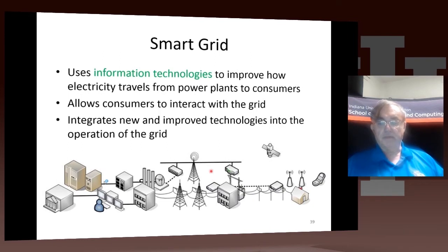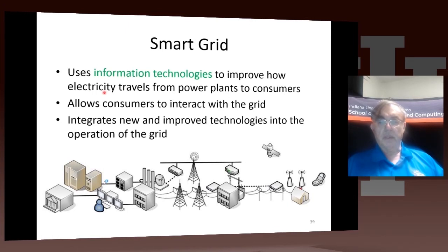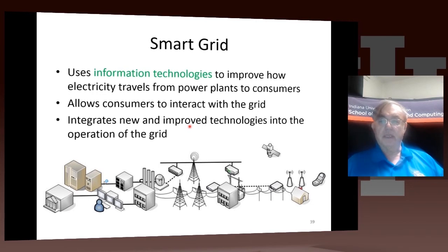Smart grids are straightforward. You take all the items on the grid — all the different transformers, transmission lines, meters, and things like that — and you internet-enable all of them and send that data to the cloud. You use that data for consumers to use their energy more efficiently, for power producers to know when they have a problem, and to do selective power-offs efficiently on days when more power is needed than is available, so they do not have to switch on inefficient sources of additional power.